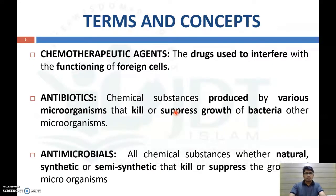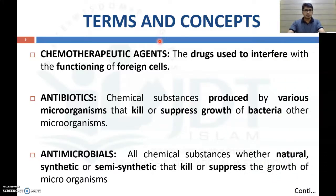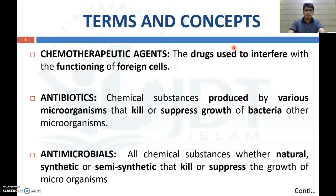We may have come across different agents like chemotherapeutic agents, antibiotics, and antimicrobial agents. What is the difference between these three terms? Chemotherapeutic agents are drugs used to interfere with the functioning of foreign cells. Foreign cells may be pathogenic microorganisms, neoplastic cells, cancer cells, or any other type of foreign cells.